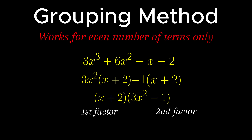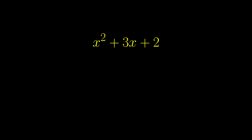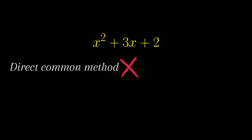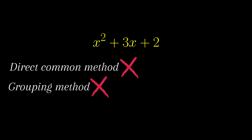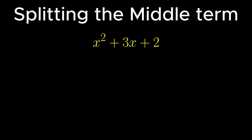This method works only when the number of terms is even. In case of an odd number of terms, this method fails. Consider an expression x squared plus 3x plus 2. By inspection, it is clear that the direct common method fails as no term is common. The grouping method also fails as only one group of two is possible, hence it can't be applied. To solve such cases, there is an extension under the grouping method to convert an odd number of terms to even by using splitting of the middle term.